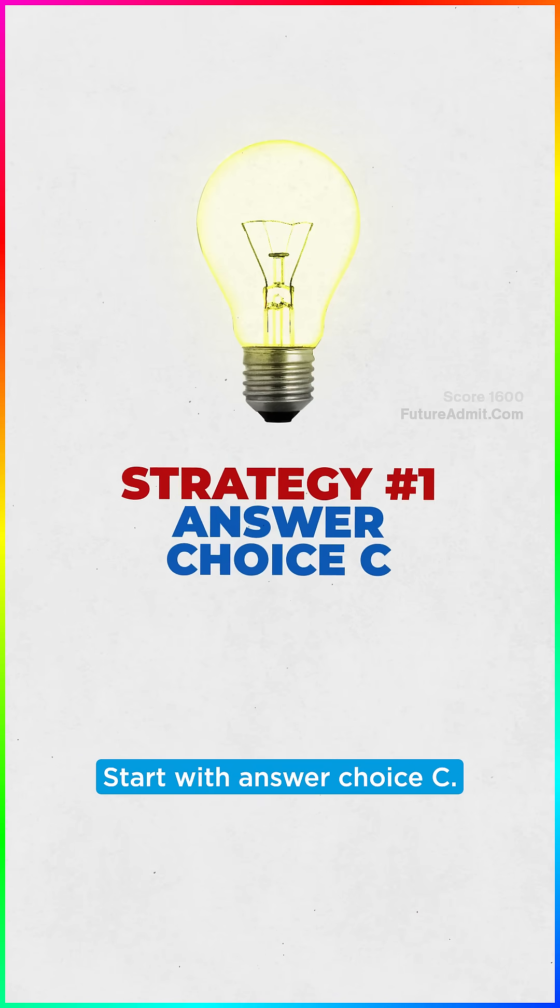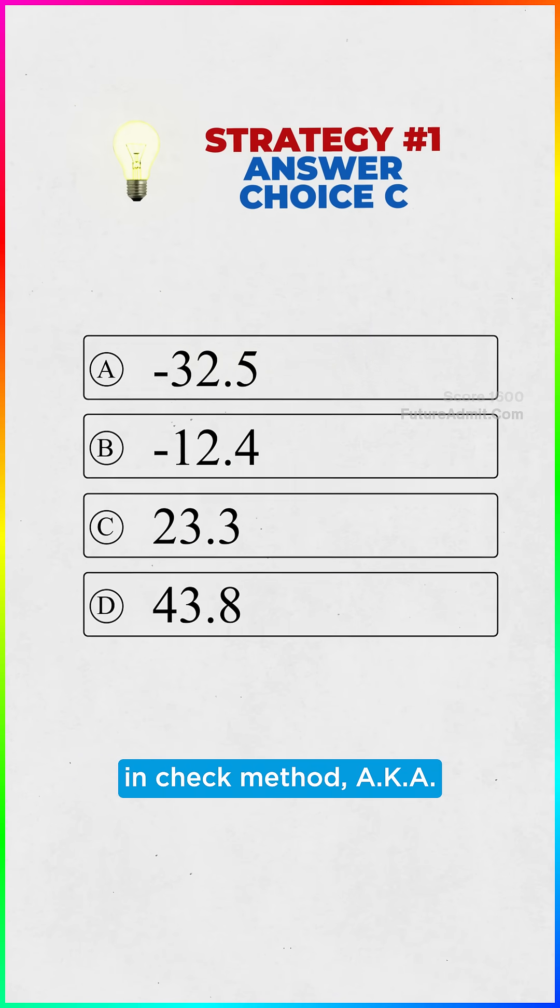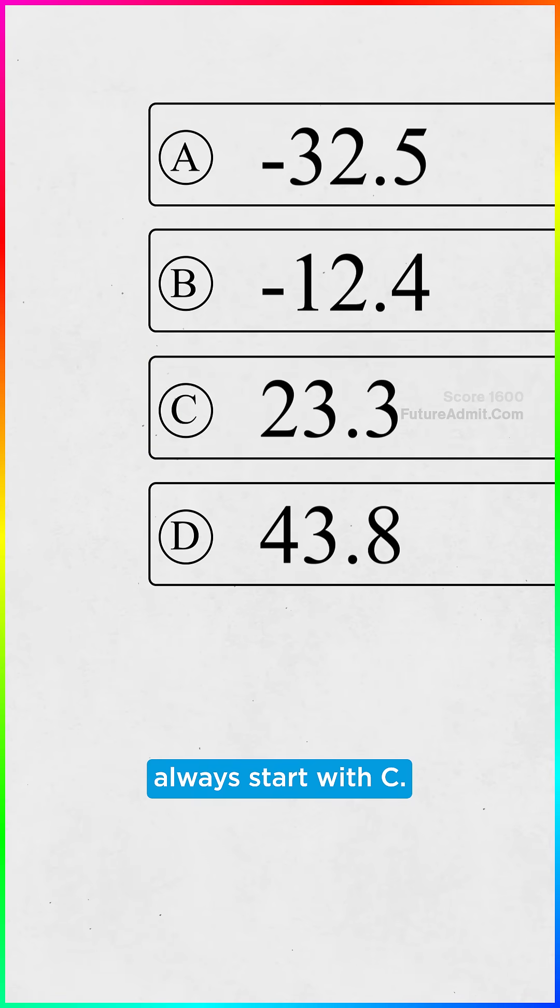Strategy 1: Start with answer choice C. When you're using the plug-and-check method, aka just plugging in answer choices, always start with C.